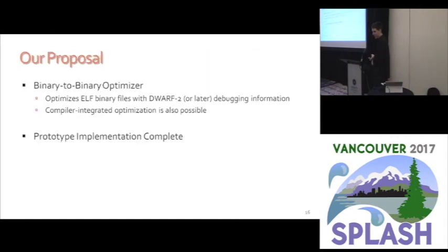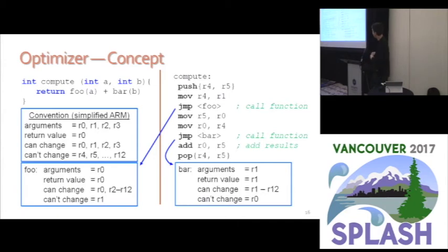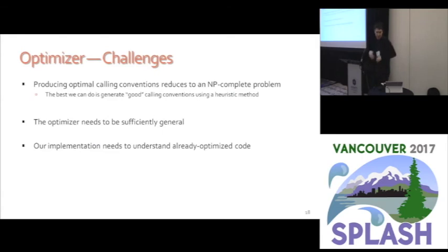What we've come up with is a binary-to-binary optimizer that takes ELF binary files with debugging information and uses that to rewrite them to get rid of some of this overhead. In theory we could also integrate this into the compiler, which would improve things, but for our purposes it was easier to implement this way to prove the concept. We have a prototype implementation. The idea is: if we can change the calling convention of individual functions, not using the same convention everywhere, we can make things a lot smaller. Producing good calling conventions initially seemed easier than register allocation, but it turns out it basically reduces to the same NP-complete problem.